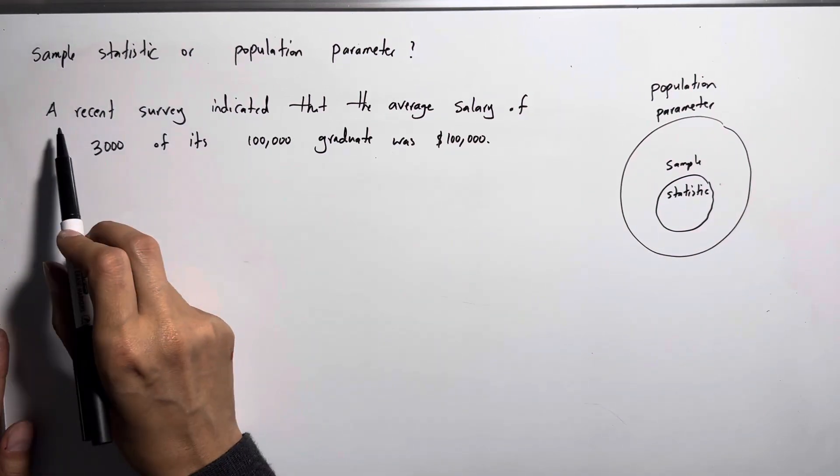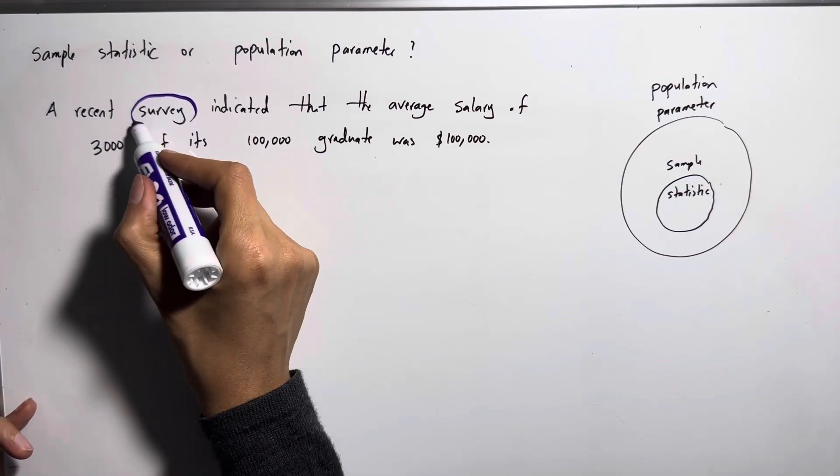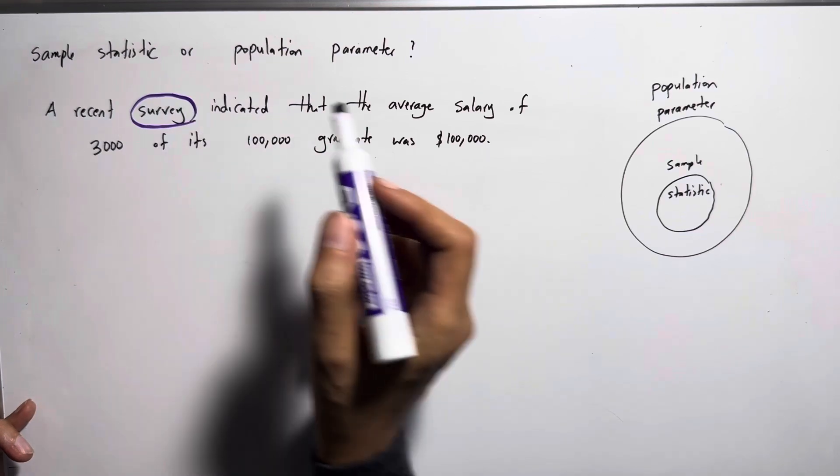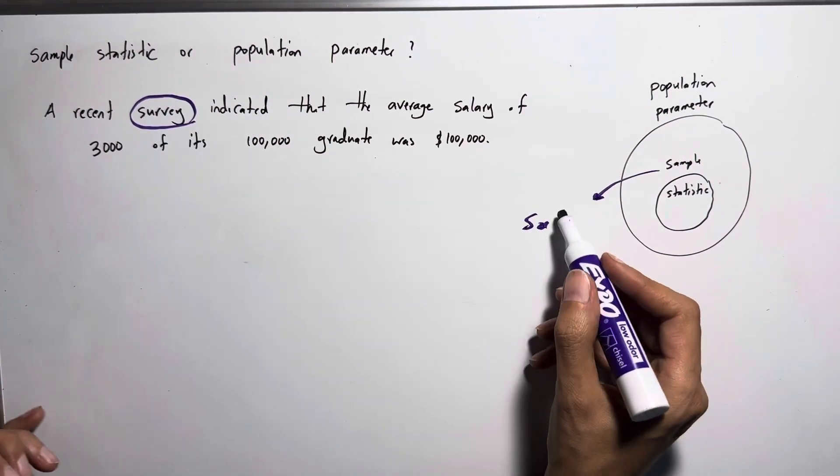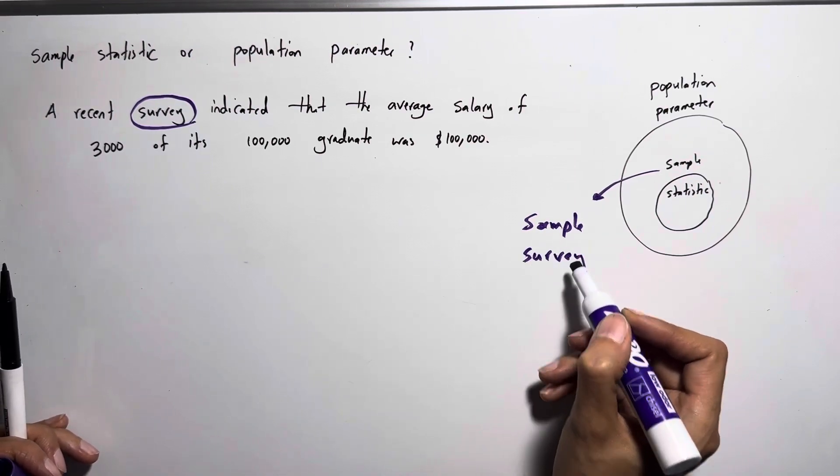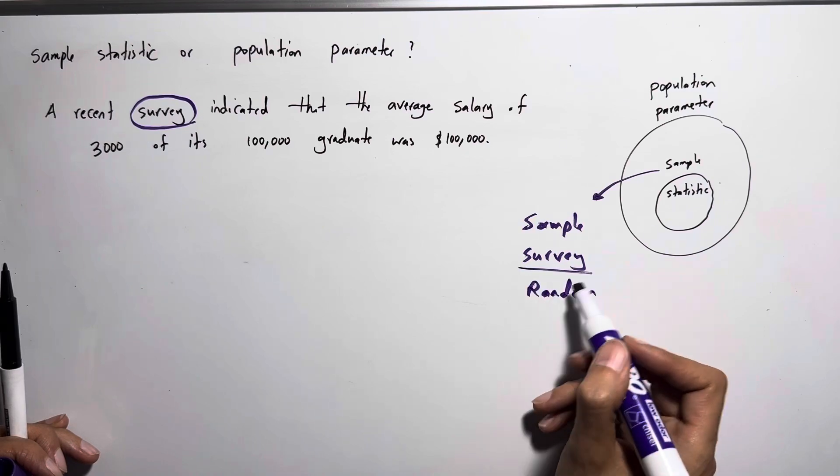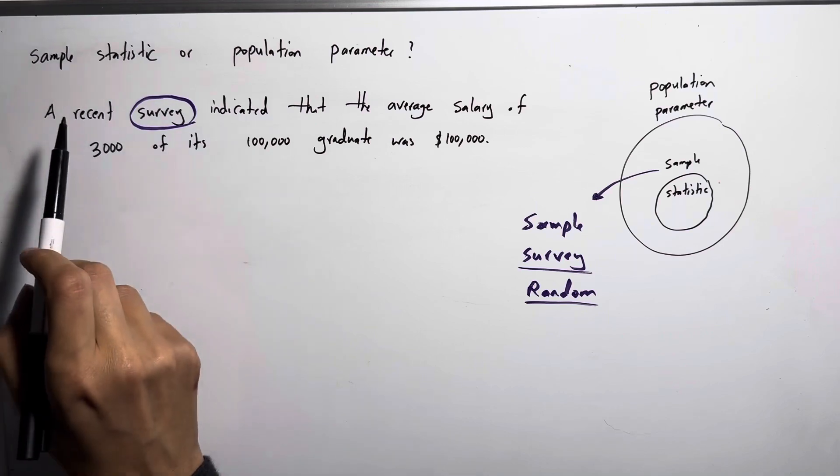Let's read this. It says a recent survey—we have a keyword. So since we have a survey, it means that you're working with a sample. Sample has keywords like survey, random, and so on. When you see these keywords, it means that you're dealing with a sample.